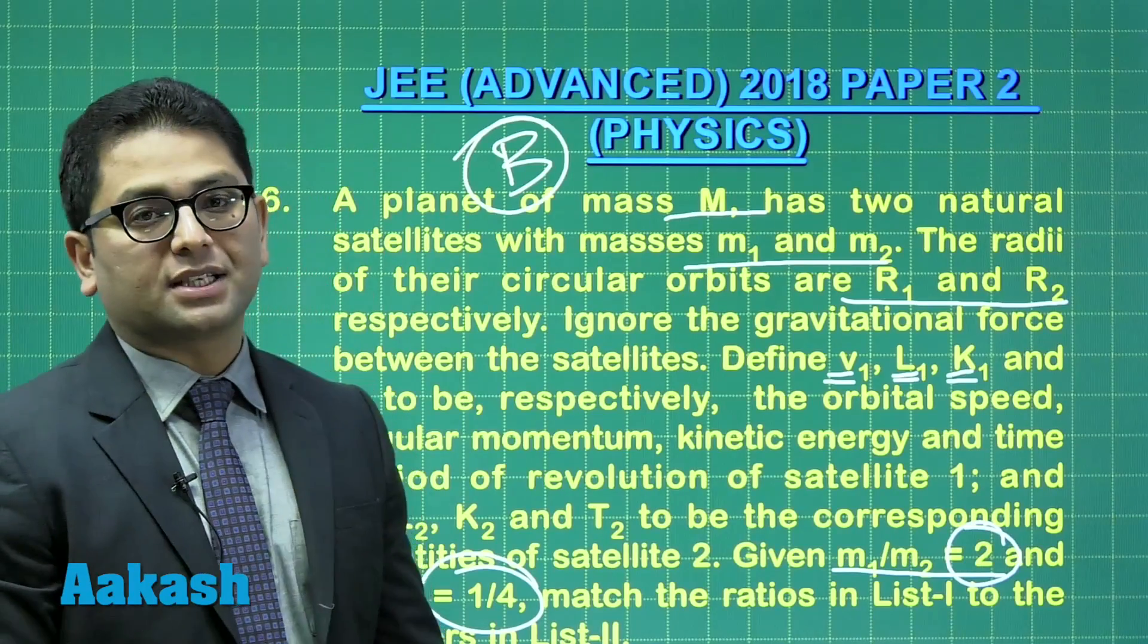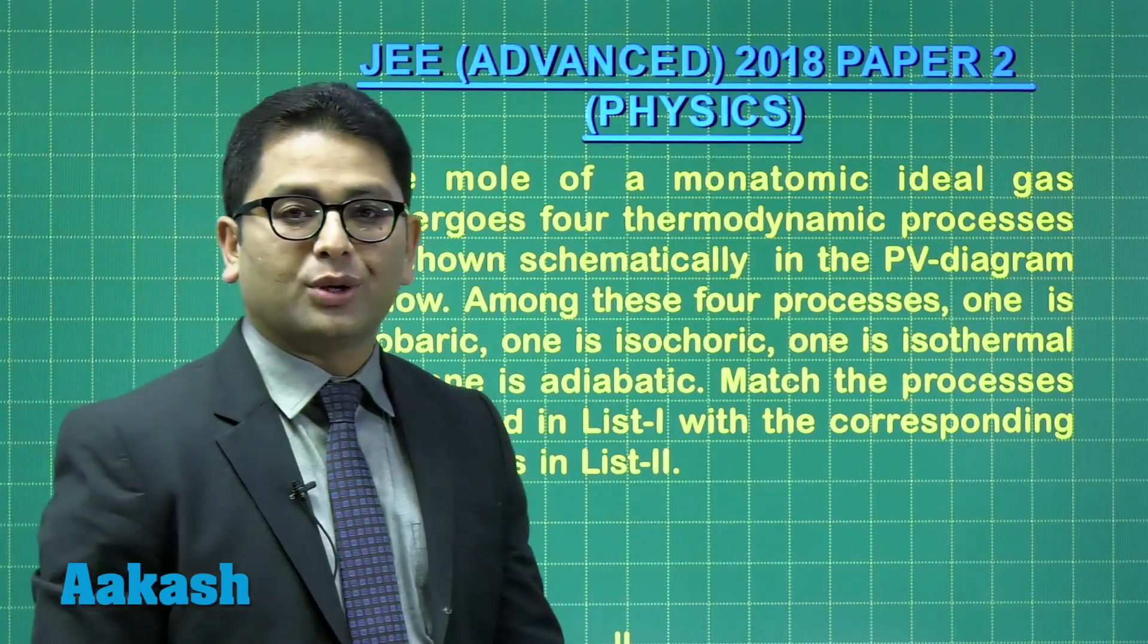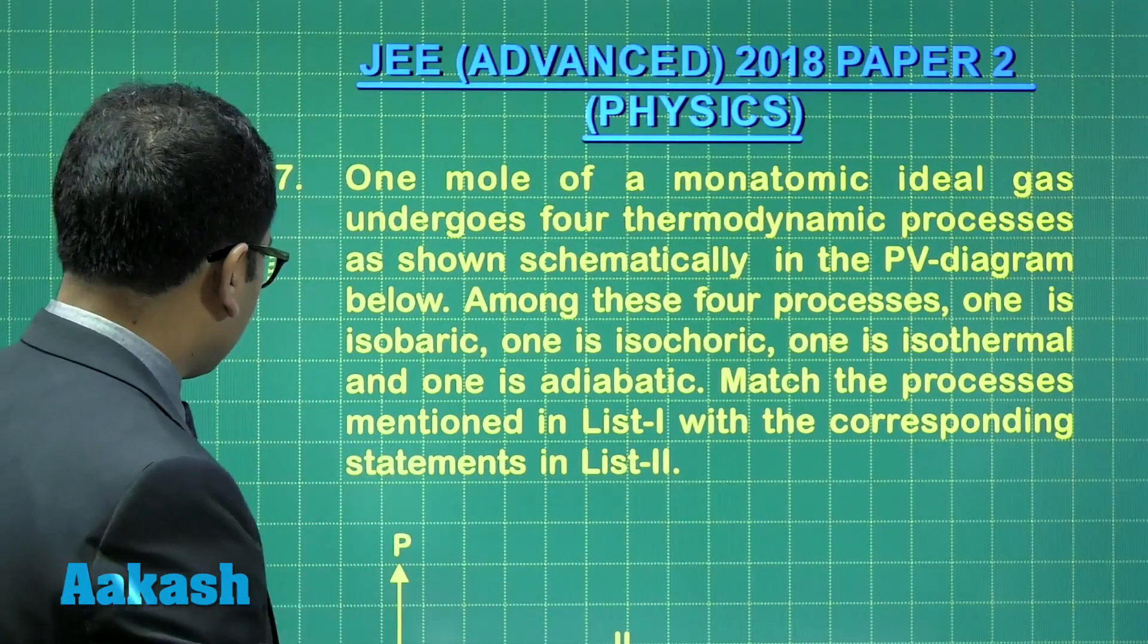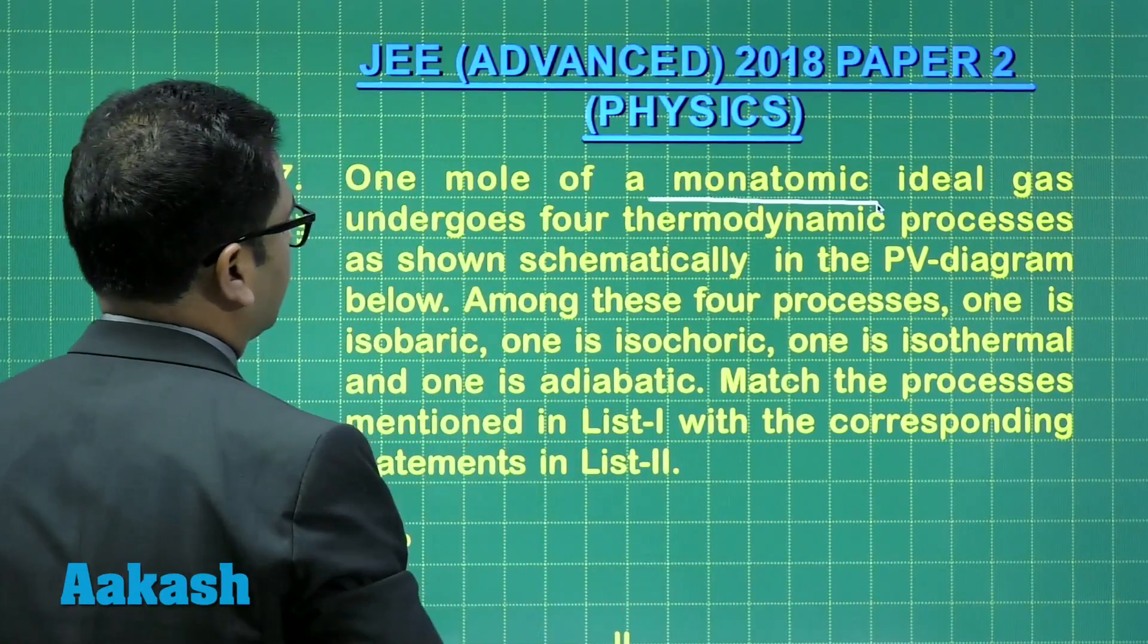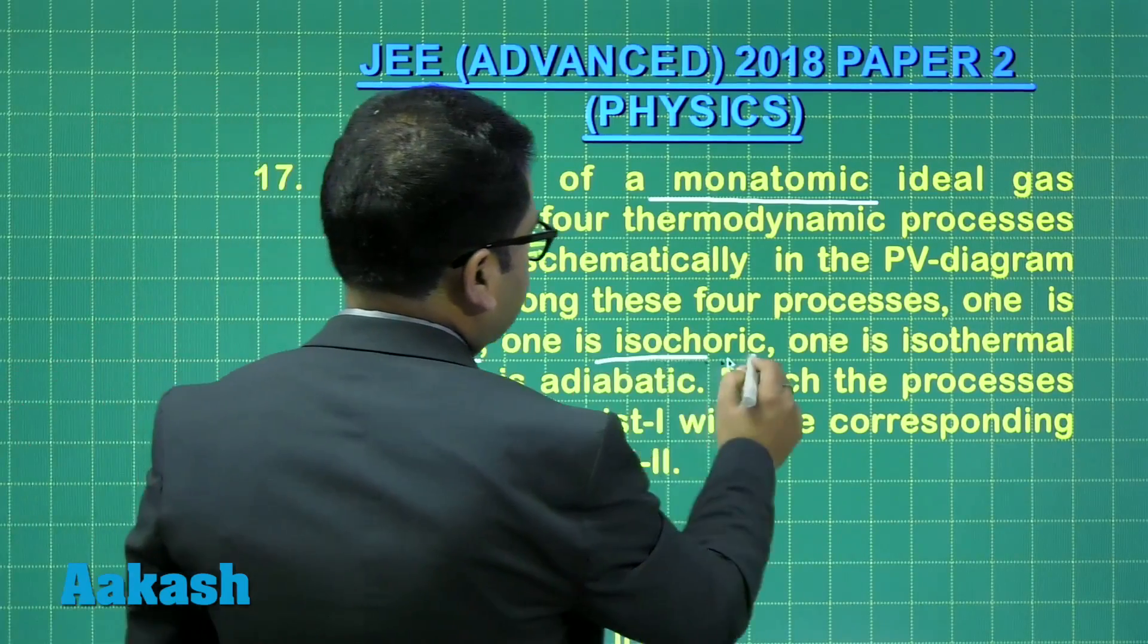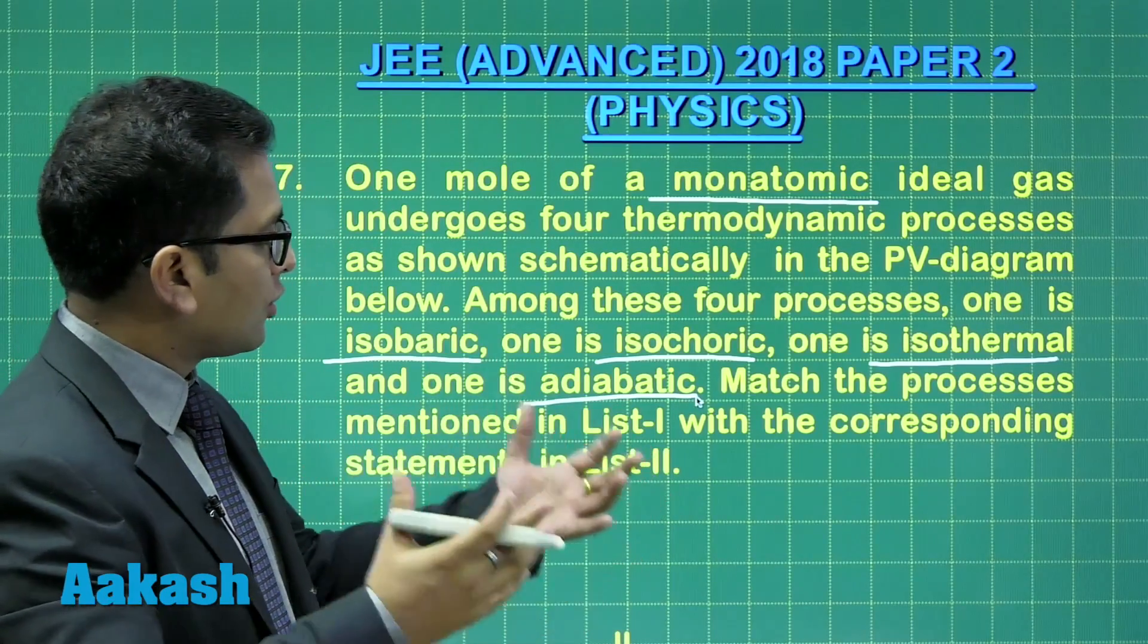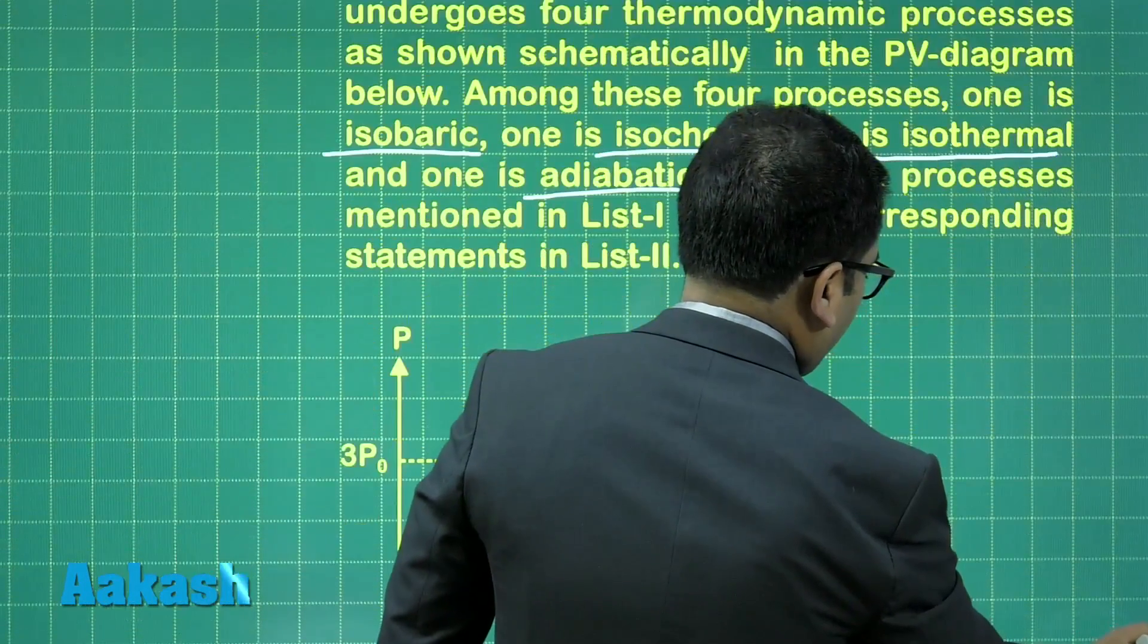Moving to question 17, from thermodynamics. One mole of monoatomic ideal gas undergoes four thermodynamic processes: one is isobaric, one is isochoric, one is isothermal, and one is adiabatic.